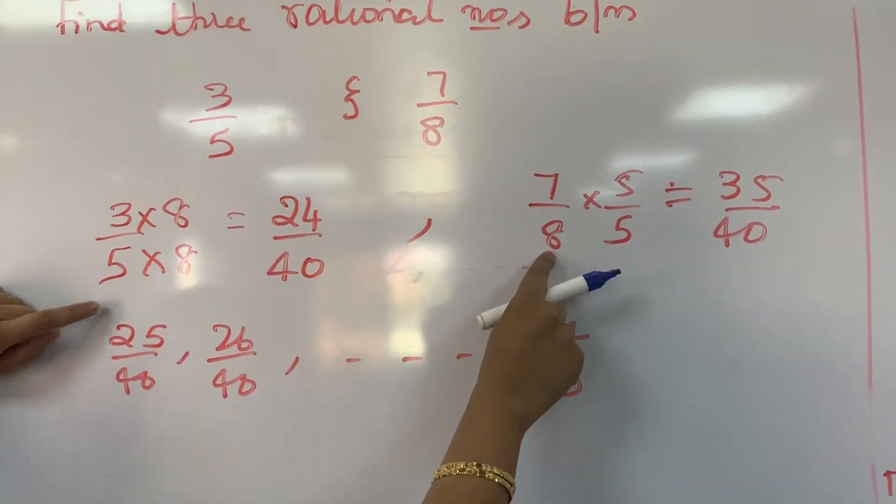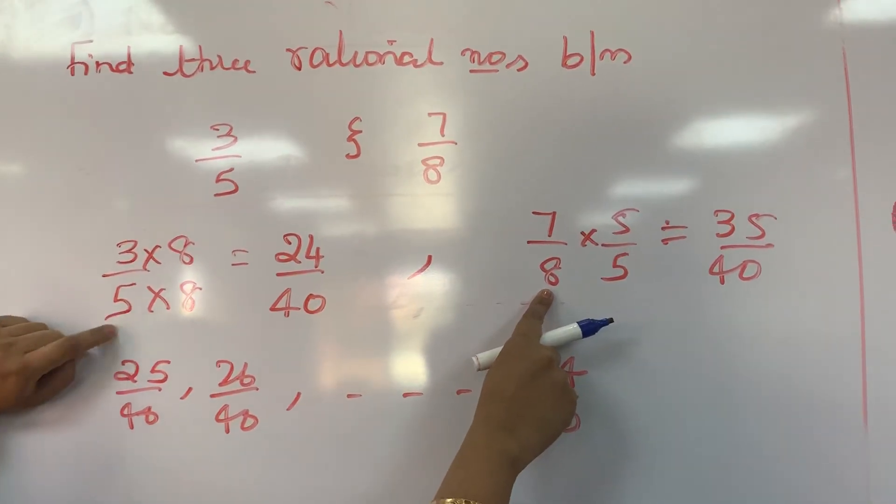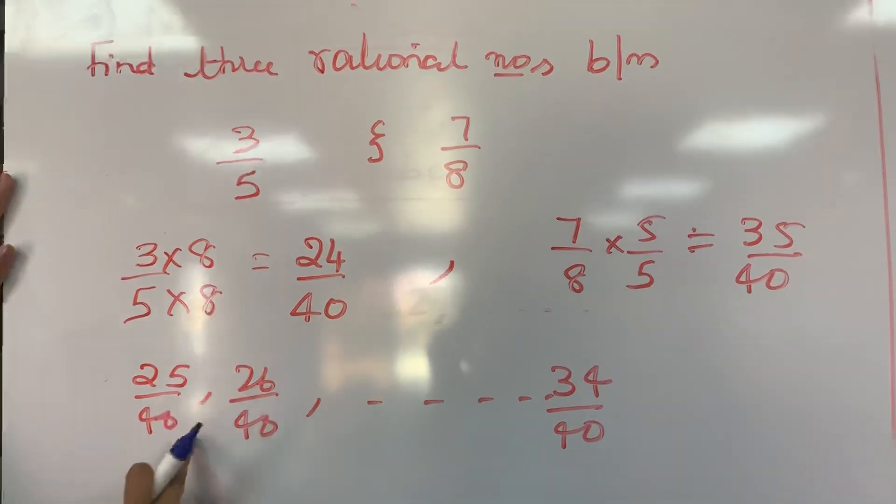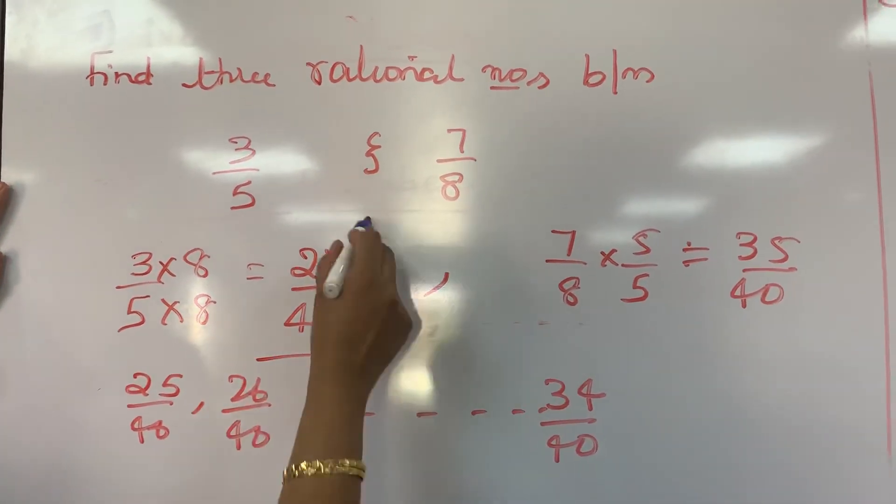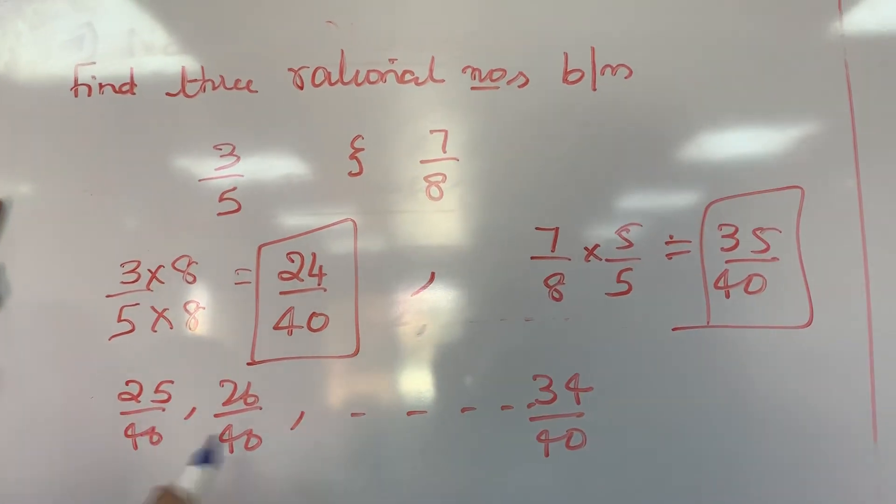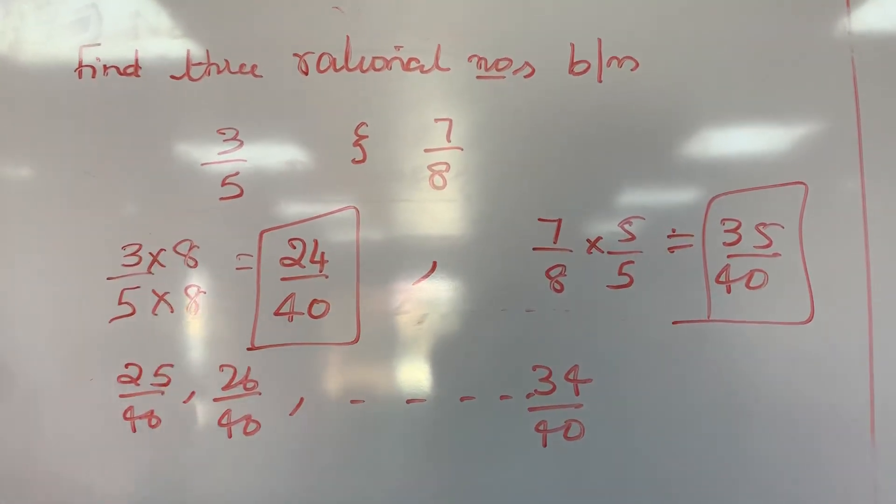Same way for this number, multiply and divide by the denominator of the other number, into 5 by 5. So it becomes 35 by 40. So between 24 by 40 and 35 by 40, you can write so many rational numbers, not only 3. Many you can write.